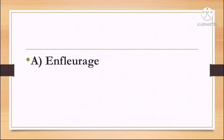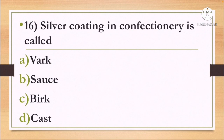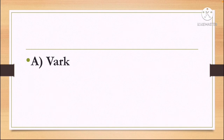Next question: silver coating in confectionery is called — Option A: Vark, Option B: Sauce, Option C: Birk, and Option D: Cast. Silver coating in confectionery is called Vark. Option A, Vark, is the correct answer.